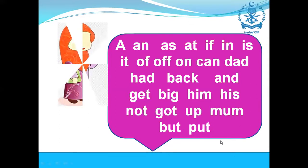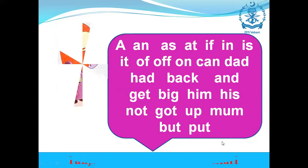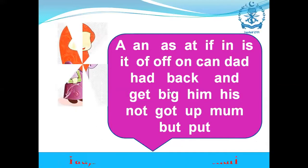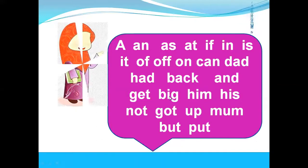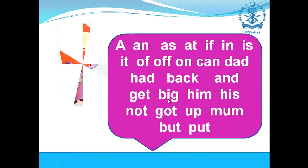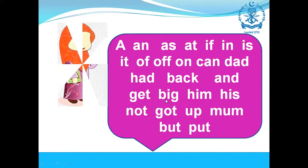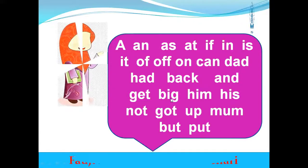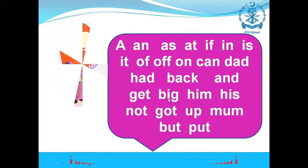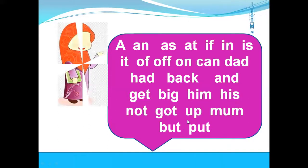Aap logon ne samaj liya hoga ke agar 'a' aa raha hai toh usmein voice kaise aa rahi hai. Jaise hi word change hota hai — jaise yahan par 'a' aa gaya, agar hum 'a' add karein: B, A, G — toh bag ho jayega. Aur agar yahan par 'i' hai toh yeh 'big' rahega. Thik hai?